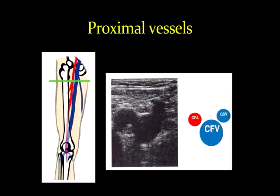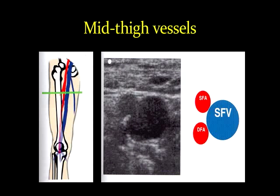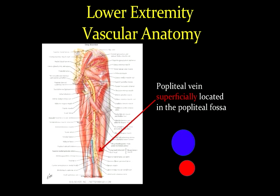In the mid-thigh, typically the artery has divided into two, and the superficial femoral vein — which is a misnomer, as it's not considered a superficial vein but a deep vein — is seen medial to the two arteries. In the popliteal area, the common femoral and superficial femoral vein dives through the adductor canal, coming out superiorly with the popliteal vein located superficial to the artery in the popliteal fossa. Sometimes we say this is the "pop on top," or the popliteal vein on top of the artery.